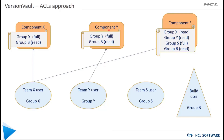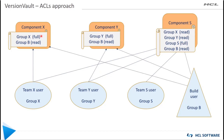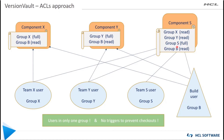Similarly, for the Team Y user, there will be an entry in the policy file with full access on component Y and read access on component S. For the Team S user, there will be an entry with full access. And for the build user, as you can see in all three policy files, there will be only read permission given. Clearly, the ACL-based approach helps us effectively manage VARB access without needing to create new groups as new VARBs are created, and the need for no-checkout triggers is also eliminated.